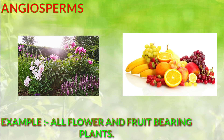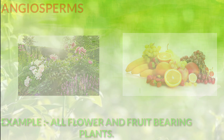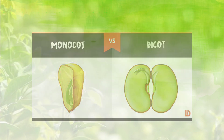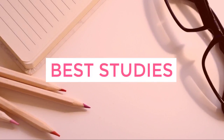So angiosperms are fruit or flower bearing plants, and examples include all fruit and flower bearing plants. Now, monocot means plants whose seeds cannot be divided into two equal halves, and plants whose seeds can be divided into two equal halves are called dicot.